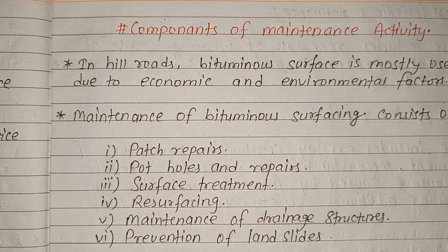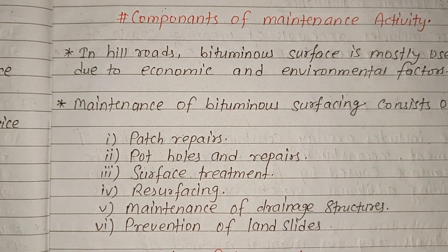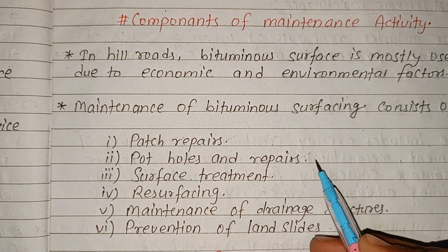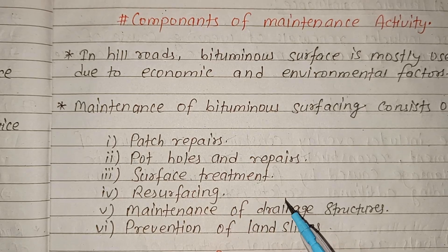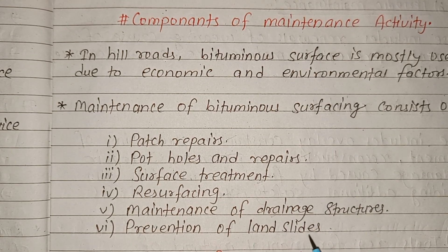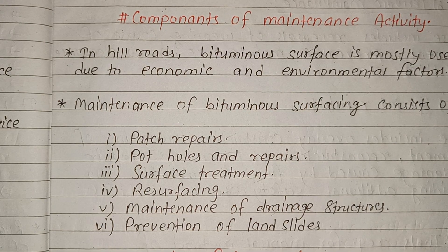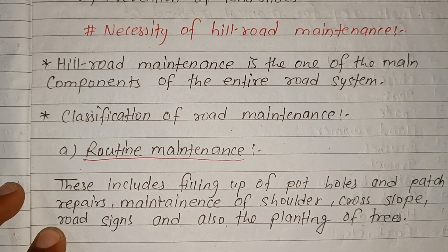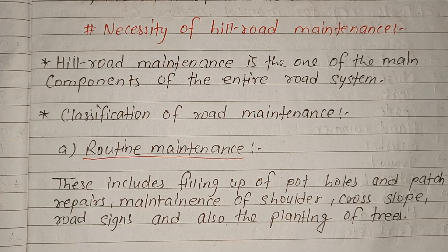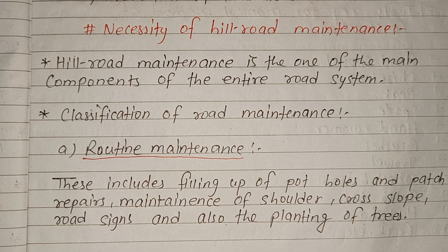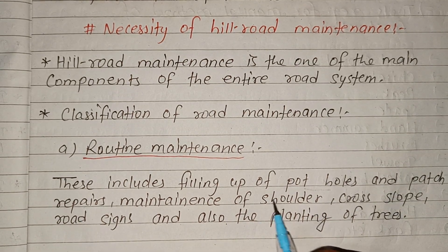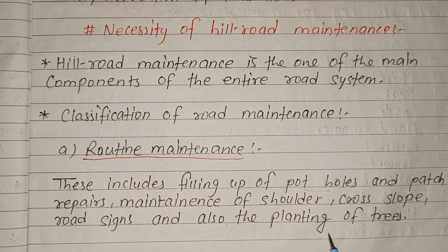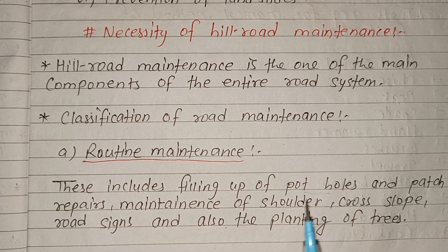Maintenance of bituminous surface includes surface patch repair, pothole repair, resurfacing, maintenance of drainage, and prevention of landslide. Hill road maintenance is one of the main components of the entire road system. Routine maintenance includes maintenance of cross slope, road signs, and planting of trees, but it is very costly on a day-by-day basis.